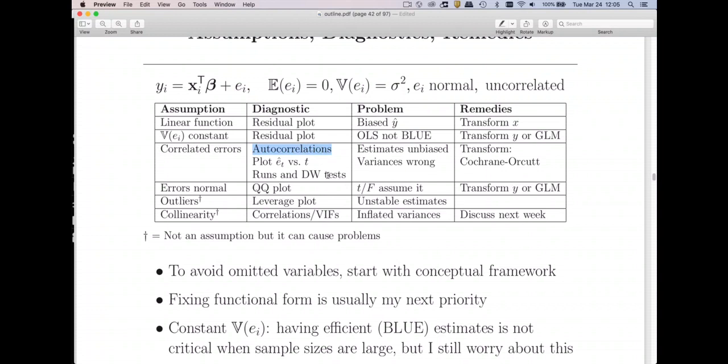Suffice it to say that whenever you have time series data, you want to suspect that you've got these auto correlations. We're not going to cover that in this class. You take a course in econometrics and they'll spend a whole lot of time on them. What goes wrong is you end up with the wrong variances. So all your significance tests and confidence intervals are not right unless you do some corrections to them. But that's all I'm going to say about correlated errors here.